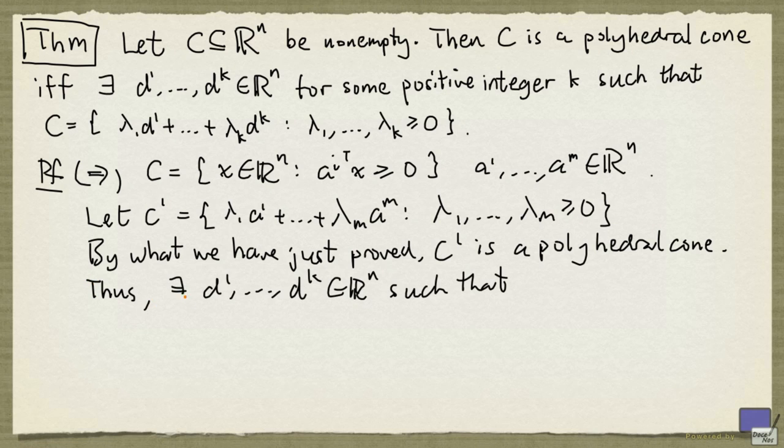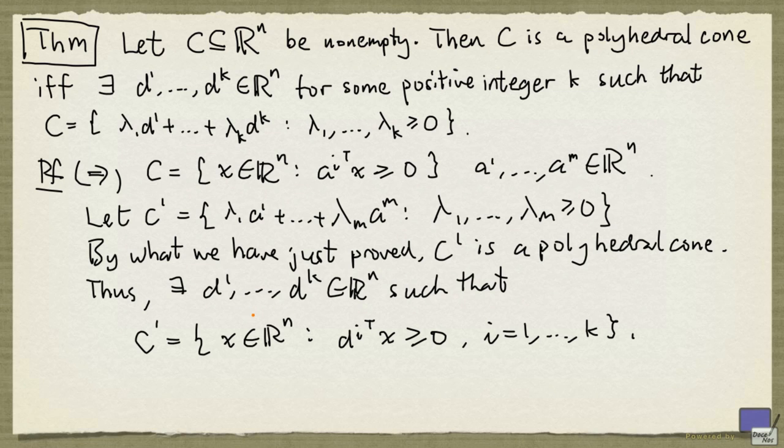So that means there exists d^1 up to d^k for some positive integer k, such that C' is the set of x in R^n satisfying these inequalities. And now we're going to show that with this d^1 up to d^k, we can write C as this set here.